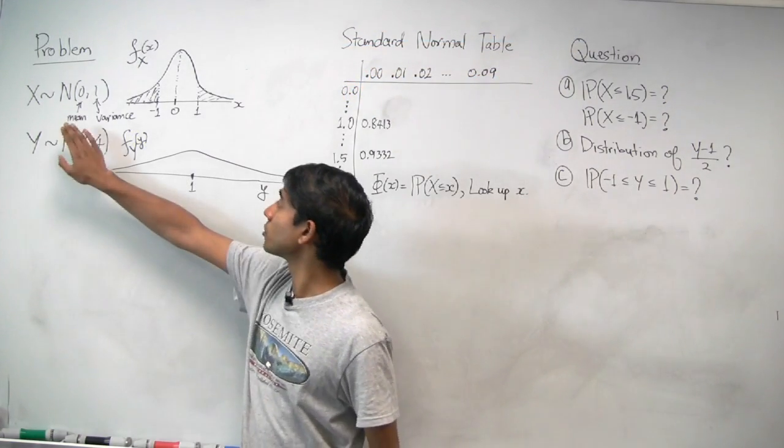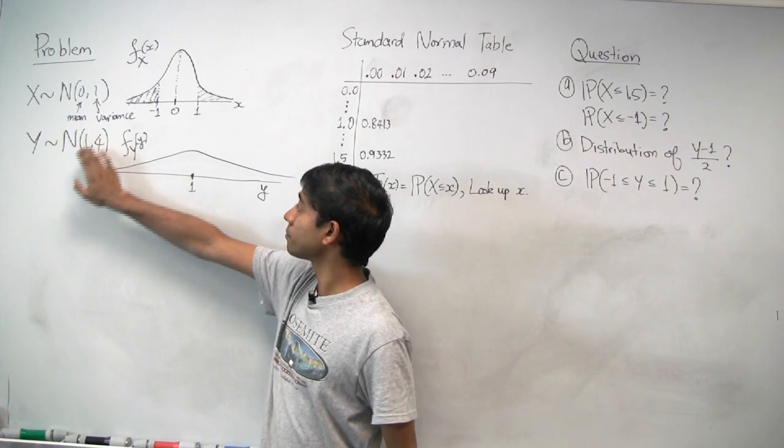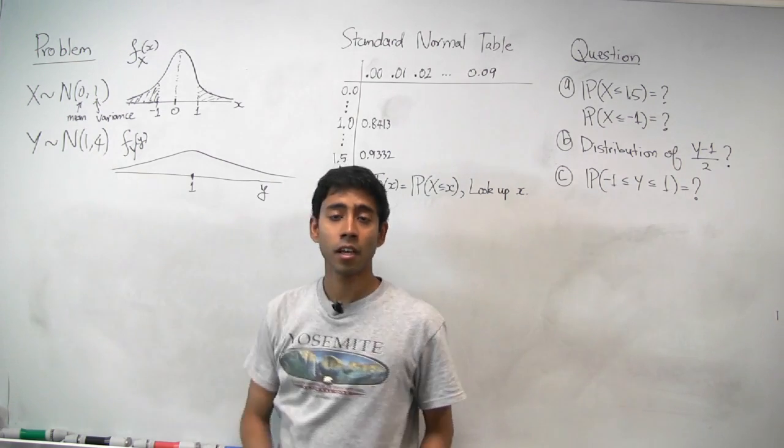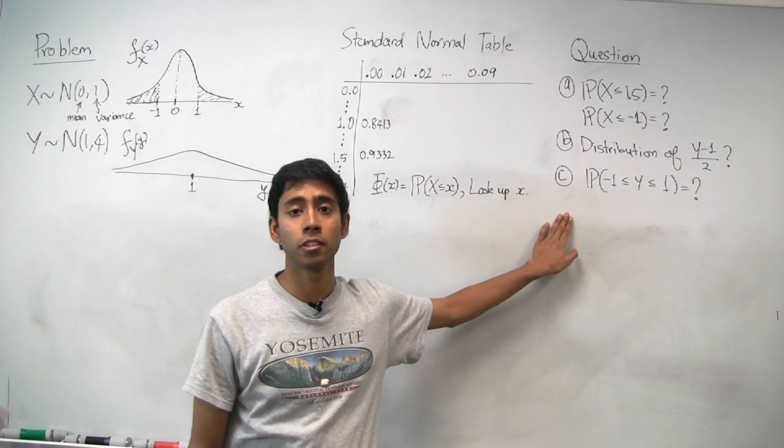We're given that X is standard normal with mean 0 and variance 1, and Y is normal with mean 1 and variance 4. And we're asked for a couple of probabilities.